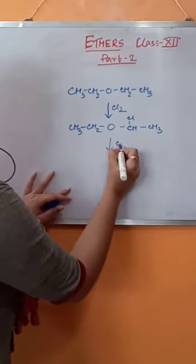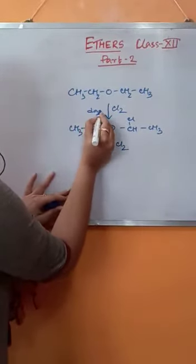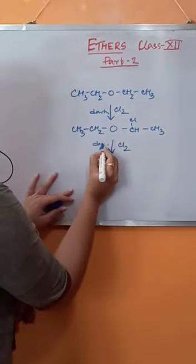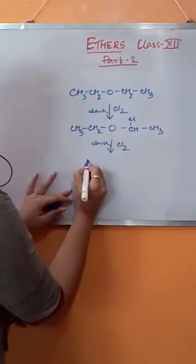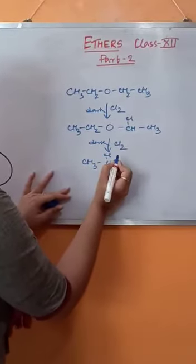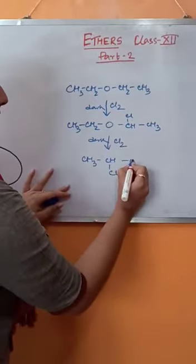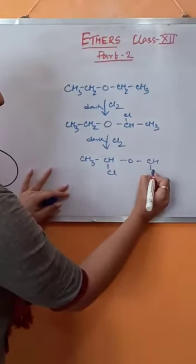On further addition of chlorine, but the reaction should take place in dark condition, another alpha hydrogen will be replaced by the chlorine atom.